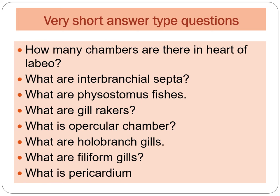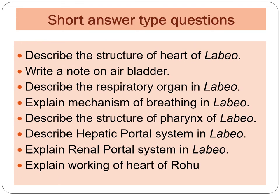The second category of questions are short answer type questions, which you have to answer in a single paragraph. The first question from this category is: describe the structure of the heart of Labeo. Question number two: write a note on air bladder. Question number three: describe the respiratory organs in Labeo. Next: explain the mechanism of breathing in Labeo.